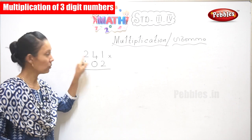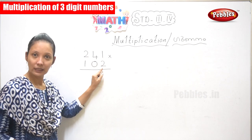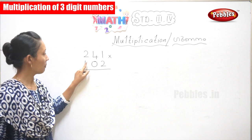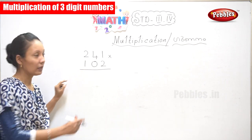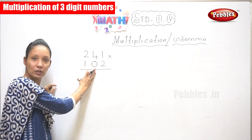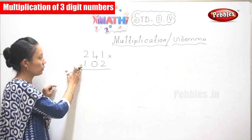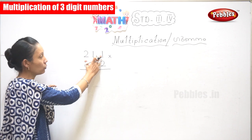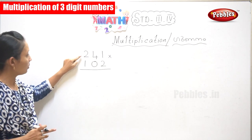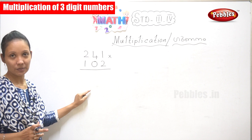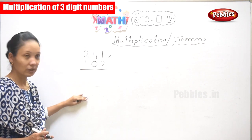First, you need to multiply these 3 numbers with 2. Your next step is to multiply the 3 numbers with 0. Then we are going to multiply that 3 numbers with 1. At the end, you have to add all those 3 numbers.